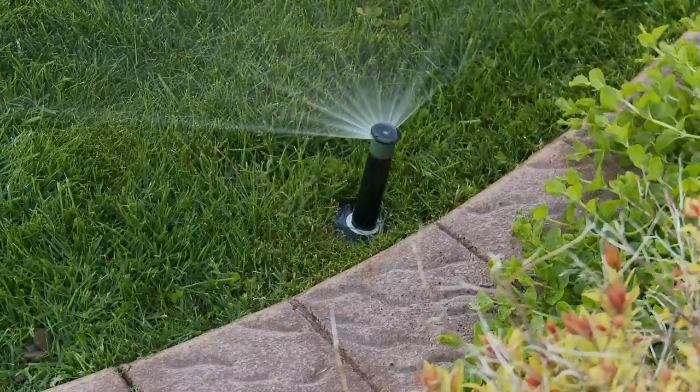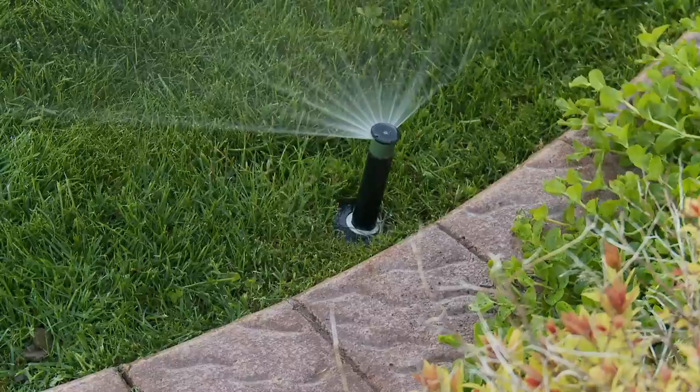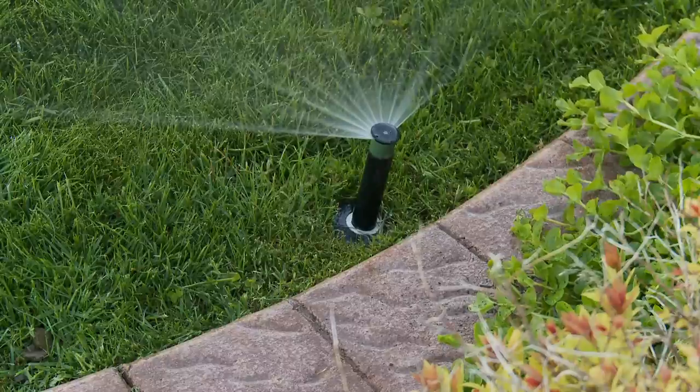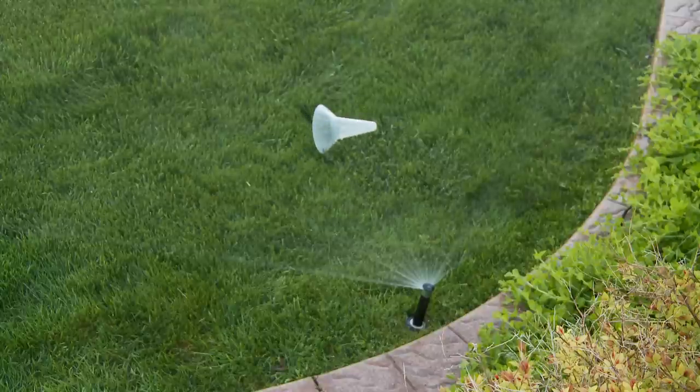You'll want to turn on your sprinklers to identify where your heads are located. Once the sprinklers are popped up, you can use sprinkler flags to mark their location or you can start setting out your catch cups at this point. You'll want to set the catch cups out at least two feet from each head. Then you can shut the sprinklers off.